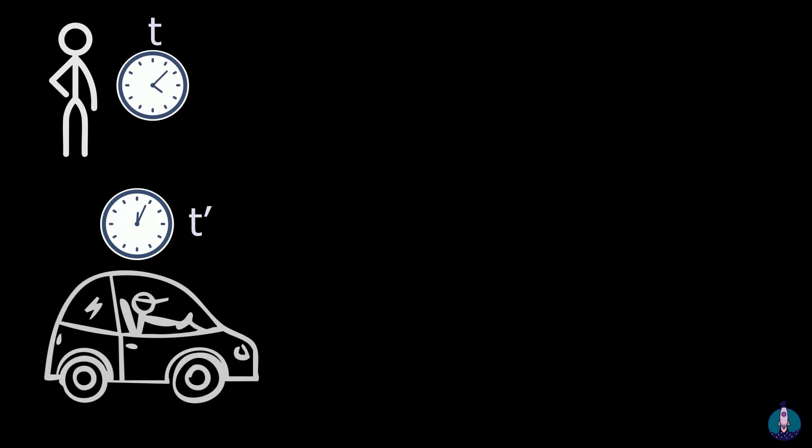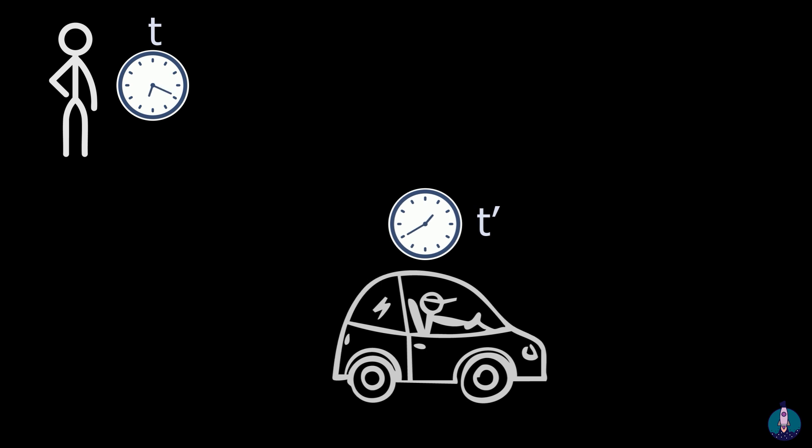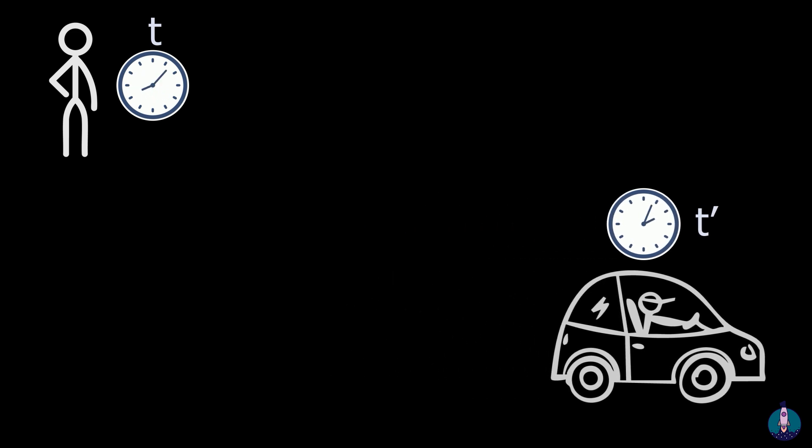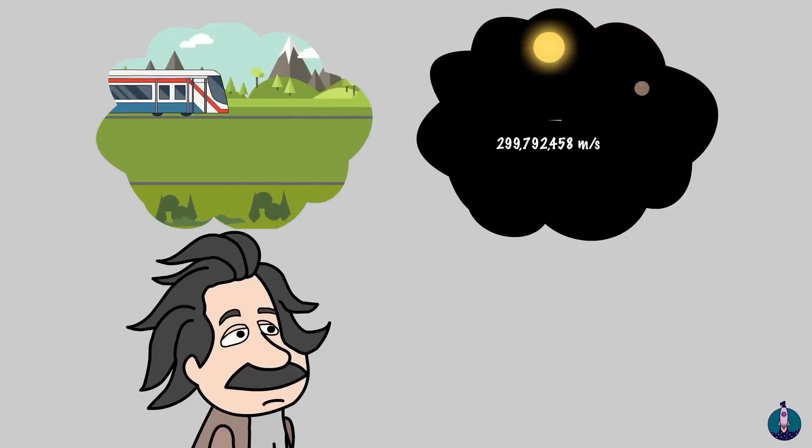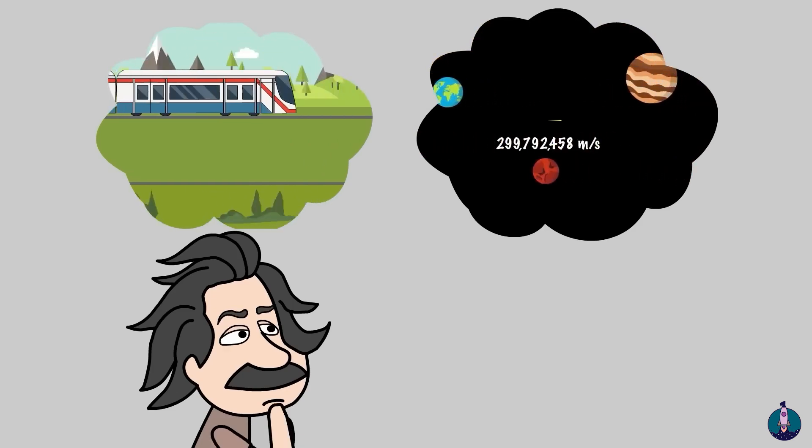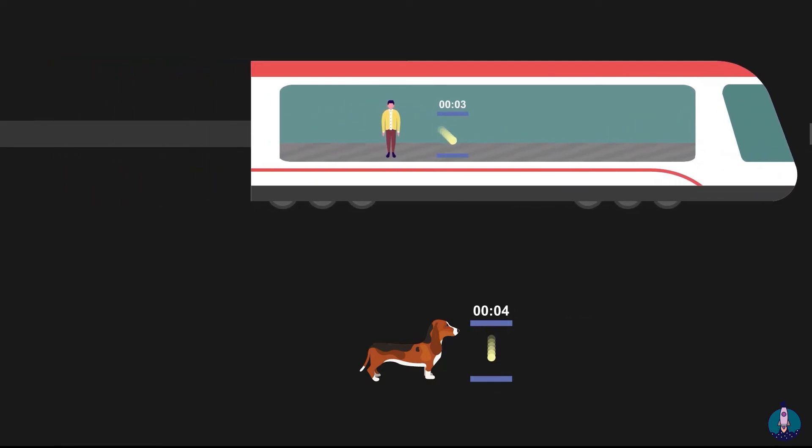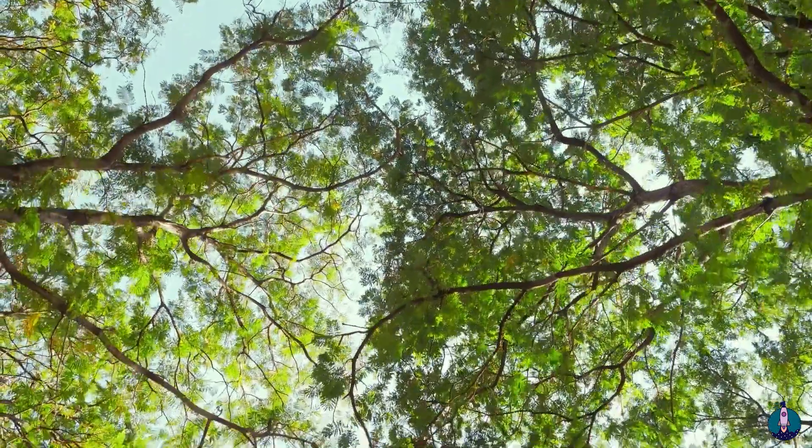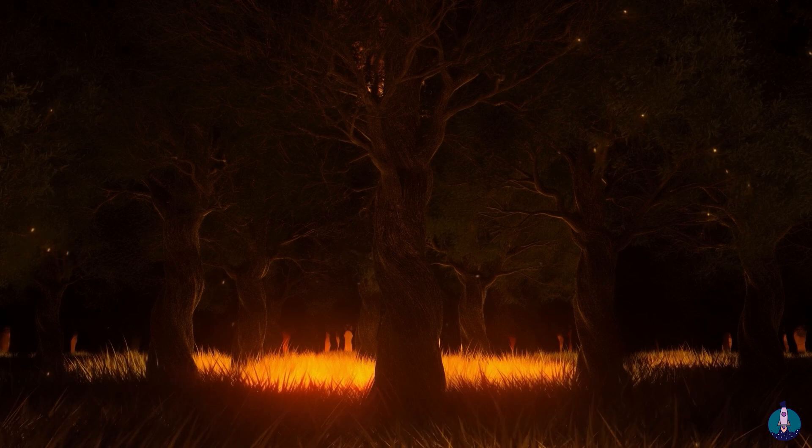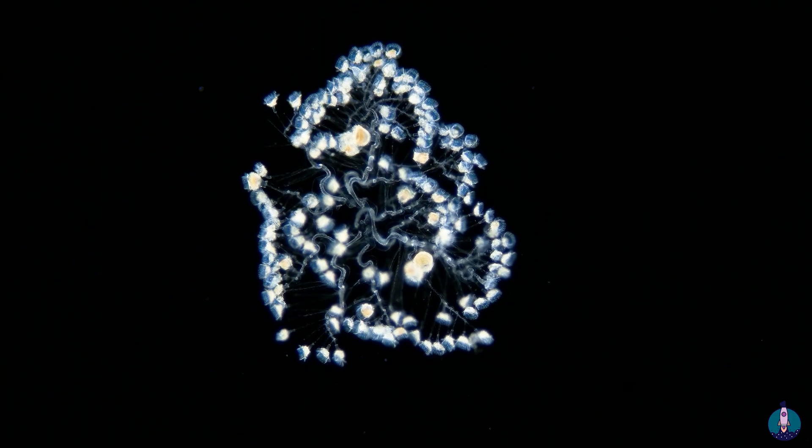T is the time that passes when you are stationary like me right now. But t dash is your time, the rhythm of events when you are moving. Einstein saw it clearly. A moving object experiences less time than a stationary one. Its clock ticks slower. Its plants grow slower. And even its dreams are shorter. Time literally contracts.